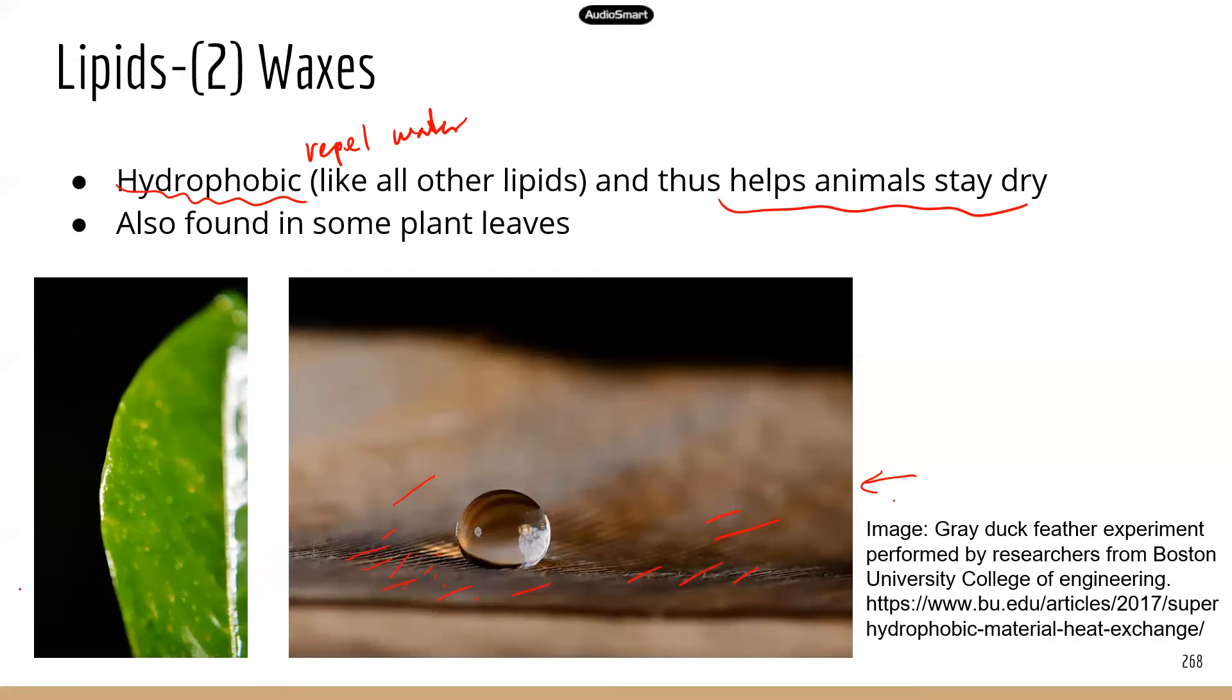The wax layer is also found in some plant leaves. As you can see in this picture, the leaf appears very shiny. That's because of the wax layer on the surface.